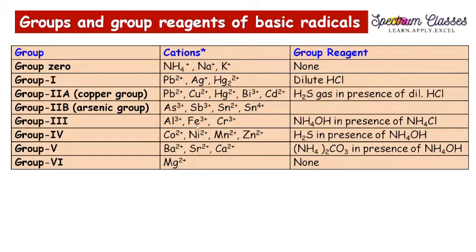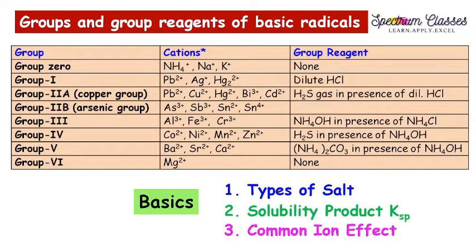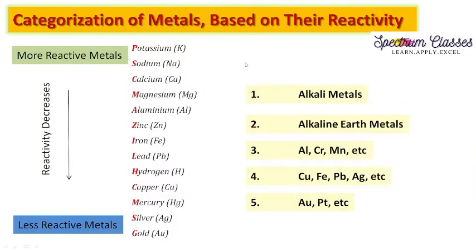The basic radicals shown in the table are grouped into different groups, starting from 0 to 6, and their group reagents are also given. They are categorized based on the nature of the salt and their group reagents. The key points on which basis we group these cations are: first, type of salts; second, solubility product; and third, common ion effect. Based on these, group reagents are also decided.